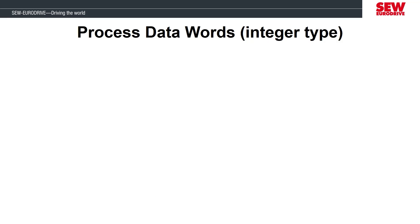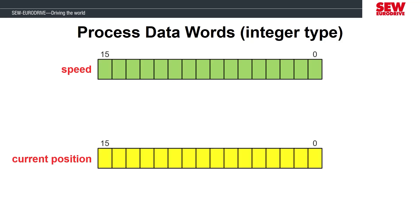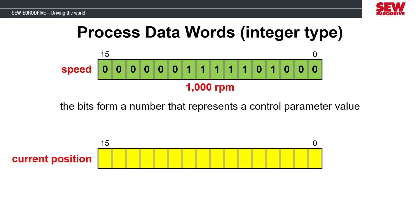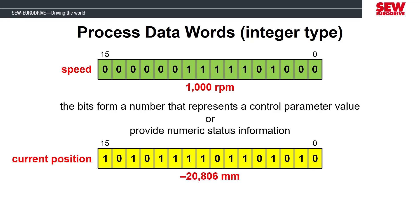The next type of process data words are integer types. These are common for the speed set point and current position feedback. For example, the speed set point is usually sent as a whole number over the process data, and the unit is commonly RPM, millimeters per second, or some other preferred unit. The binary conversion of 1000 RPM uses all 16 bits to represent a whole number rather than separate functions. These integer type words can also hold the current position as a positive or negative value — for example, a millimeter position, though it could be a different unit as well.